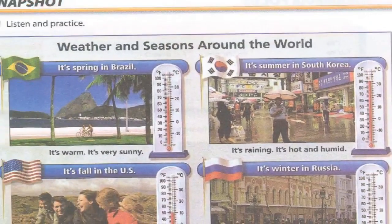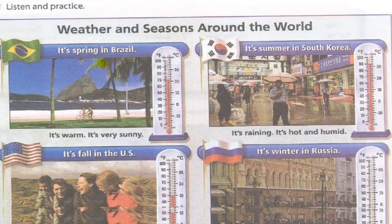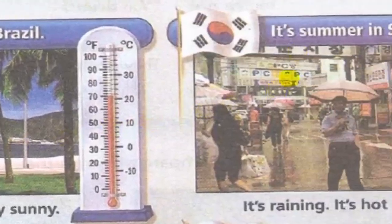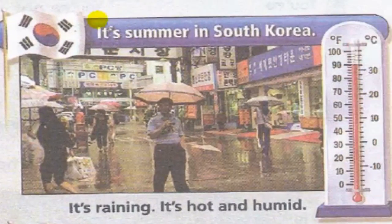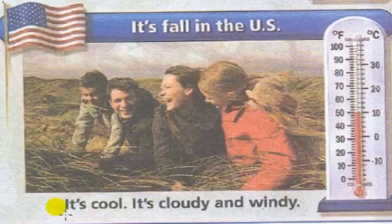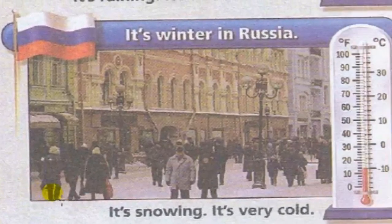Page 25, Exercise 7 Snapshot: Weather and seasons around the world. Listen and practice. It's spring in Brazil — it's warm, it's very sunny. It's summer in South Korea — it's raining, it's hot and humid. It's fall in the U.S. — it's cool, it's cloudy and windy. It's winter in Russia — it's snowing, it's very cold.